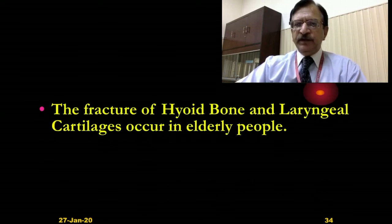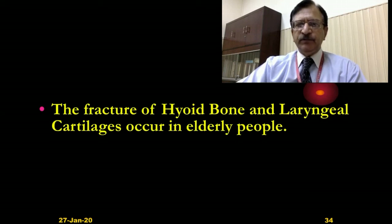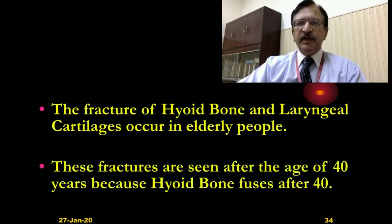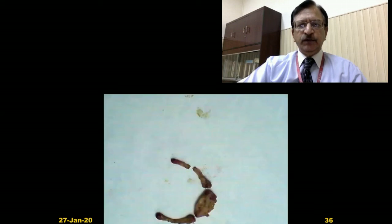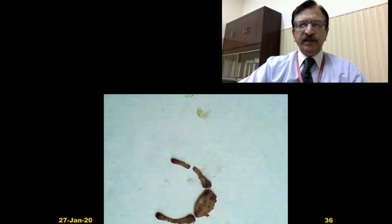Fracture of the hyoid bone and laryngeal cartilage is seen in higher age groups because these cartilaginous structures become ossified after the age of 40. Before that age they remain cartilaginous, so this finding is important after age 40 when ossification has occurred and fracture will be evident. A photograph shows a completely ossified hyoid bone with the upper greater cornu fractured in the middle.